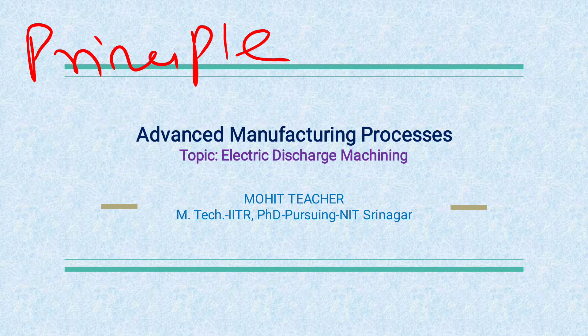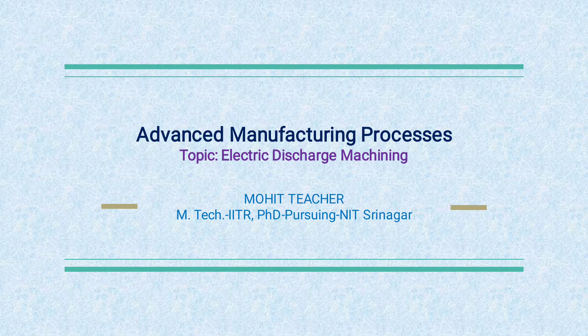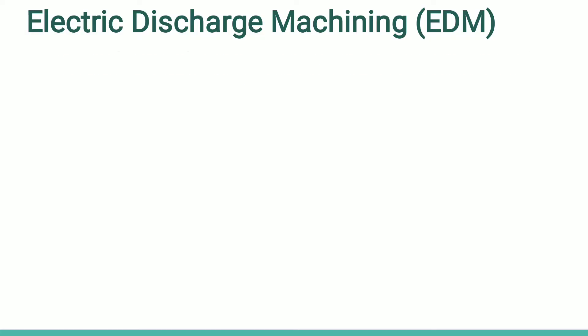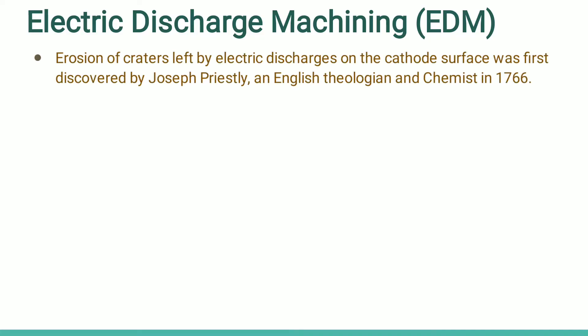We will start by discussing the principal part of EDM. Before going into the principle, I want to briefly cover the history of how the EDM process came into existence. In the beginning, in 1766, a chemist named Joseph Priestley discovered the erosion of craters on the cathode surface caused by electric discharge.